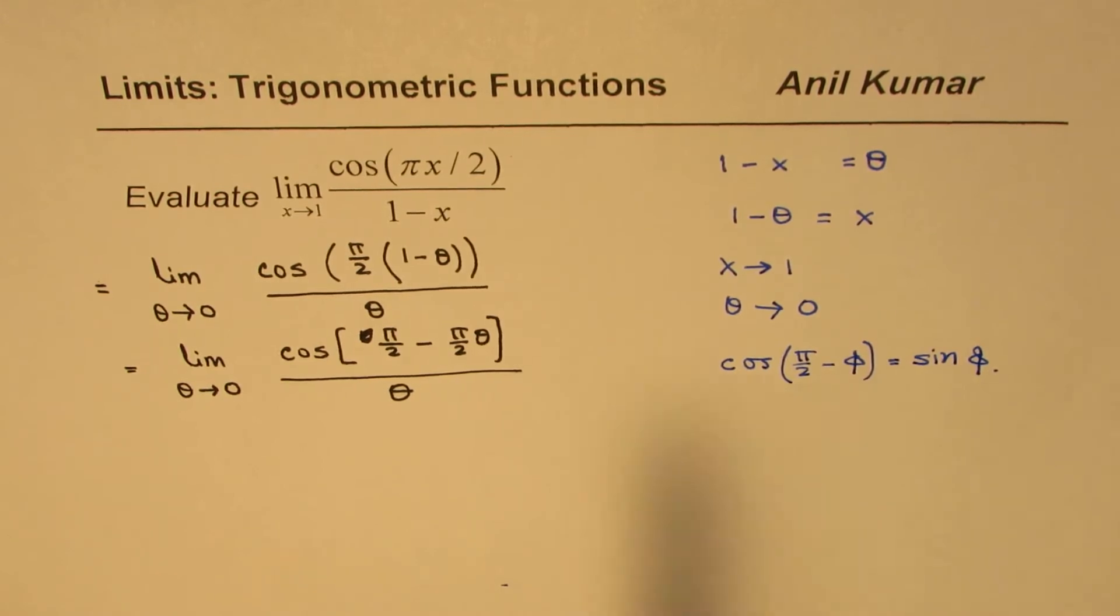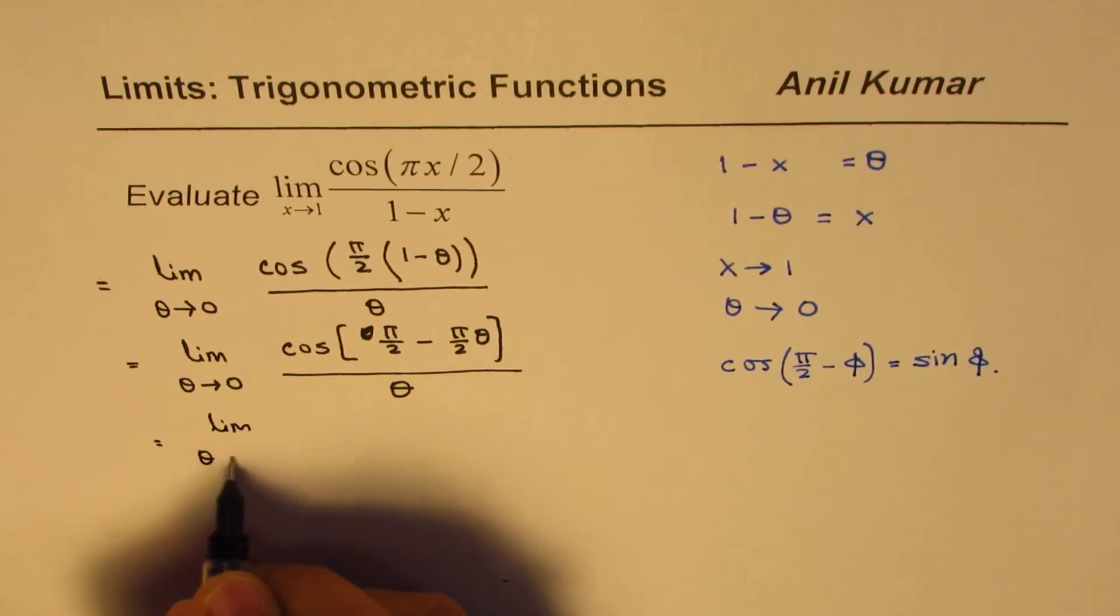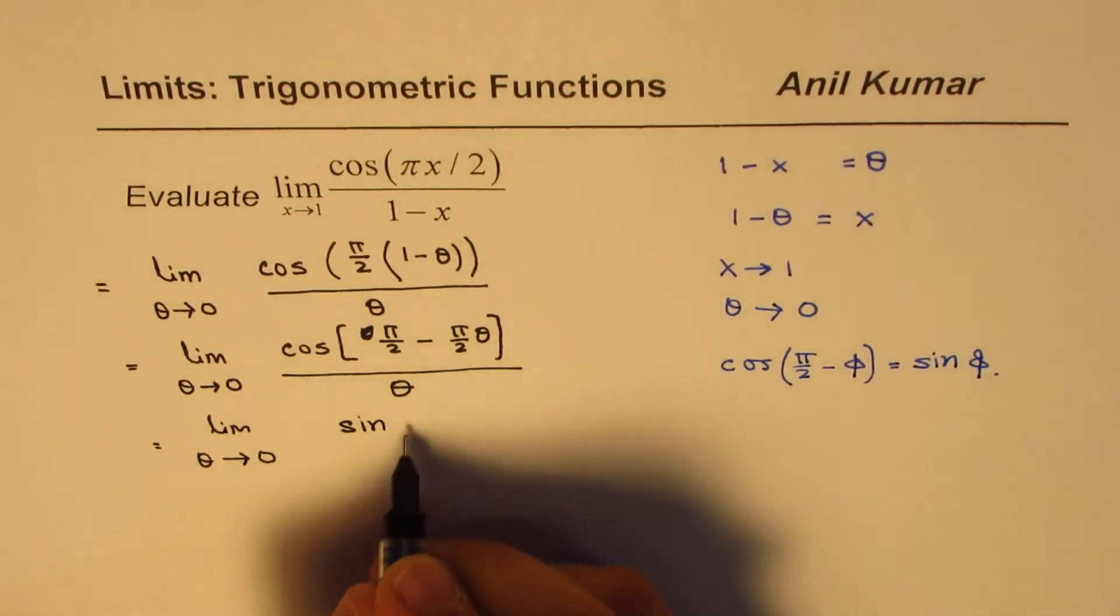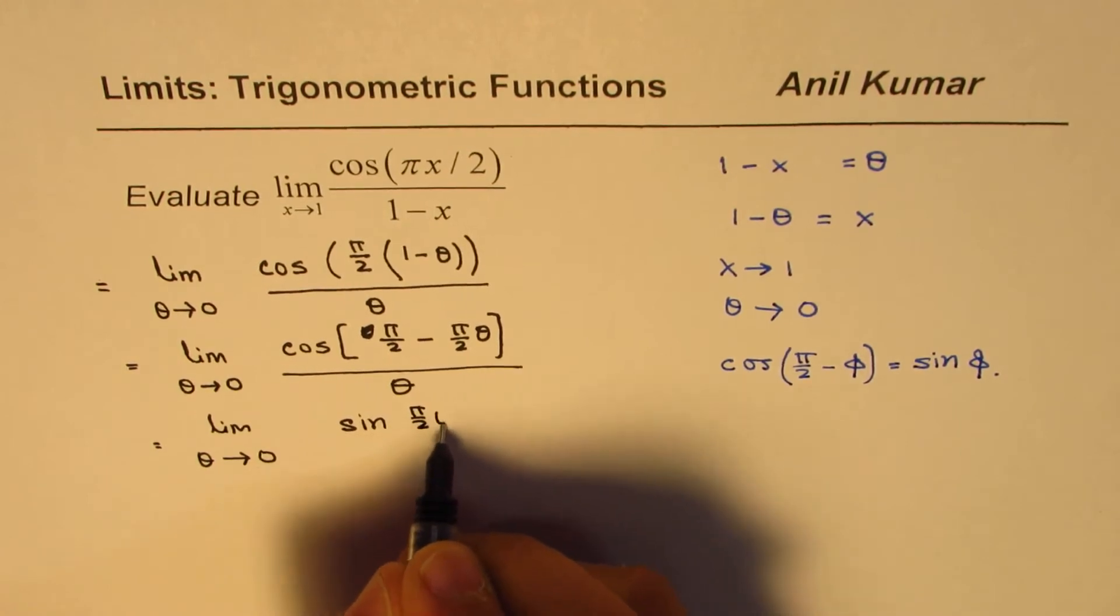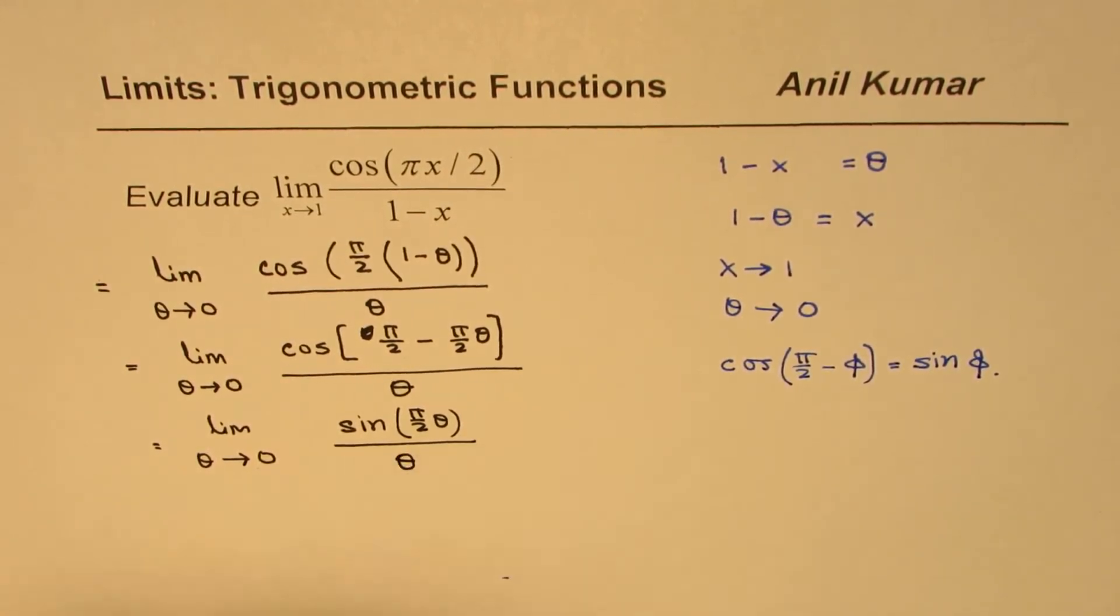So we could write this numerator as limit θ approaches 0 for sin(πθ/2) over θ. So that is how we can rewrite it.